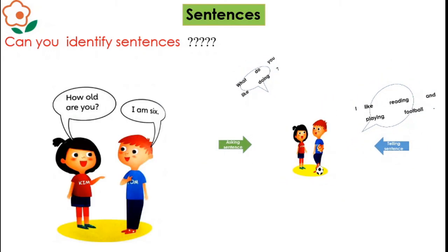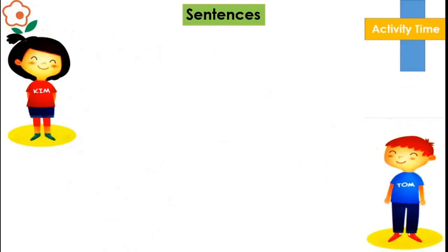In the next picture, you can see Kim is asking again, how old are you? It is an asking sentence because it has a question mark. Tom is replying, I am six. It is a telling sentence because it ends with a full stop.